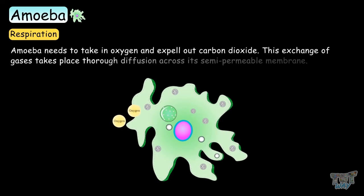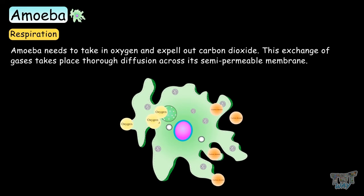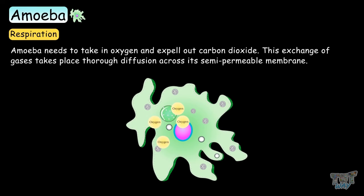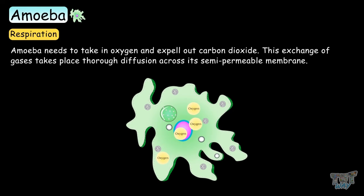Respiration: the amoeba needs to take in oxygen and expel carbon dioxide. This exchange of gases takes place through diffusion across the semi-permeable membrane.